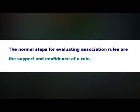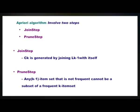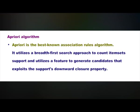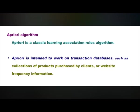The normal steps for evaluating association rules are the support and confidence of a rule. The Apriori algorithm involves two steps. The first one is the join step: C suffix k is generated by joining L suffix k minus 1 with itself. The next one is the prune step: any k minus 1 item set that is not a frequent subset of a frequent k item set is removed. Apriori is the best-known association rules algorithm. It utilizes a breadth-first search approach to count item set support and exploits the support's downward closure property. Apriori is a classic algorithm for learning association rules.